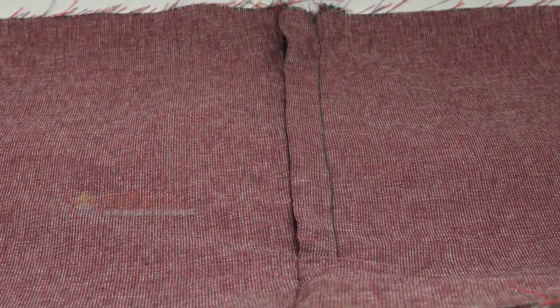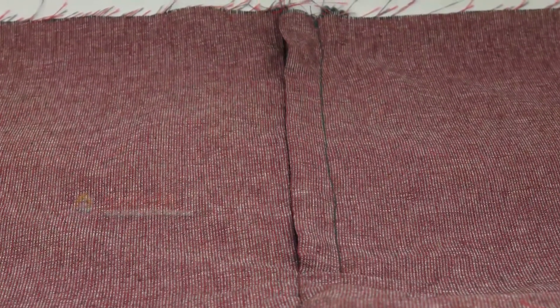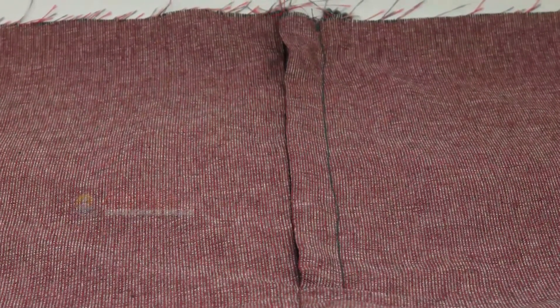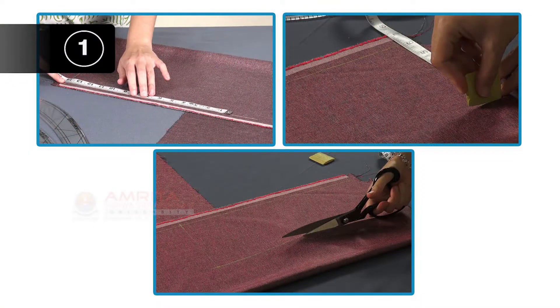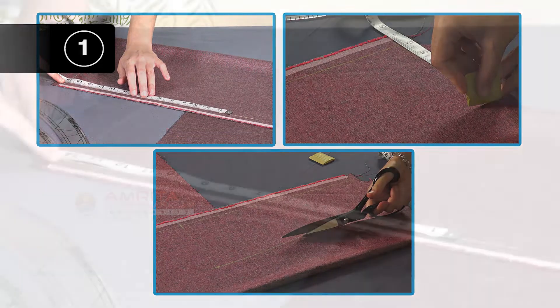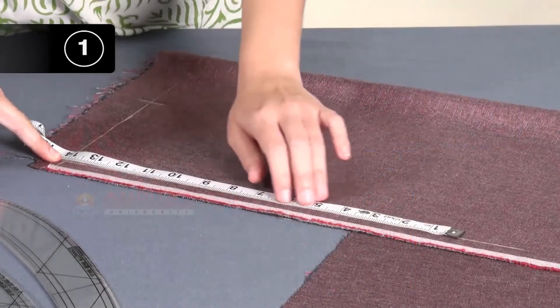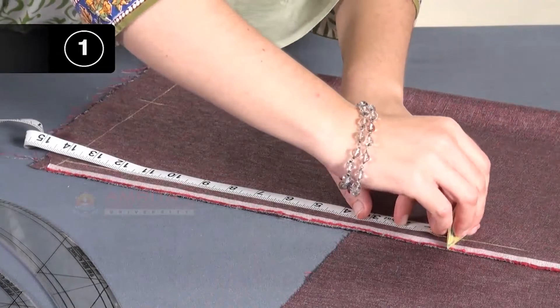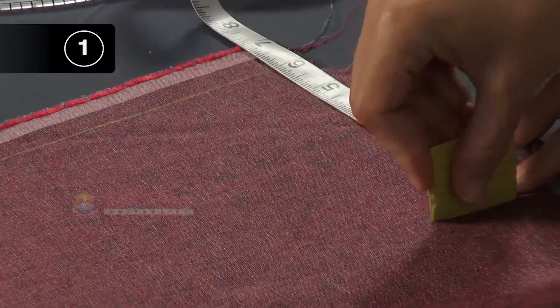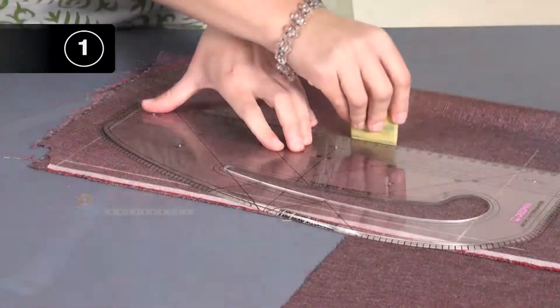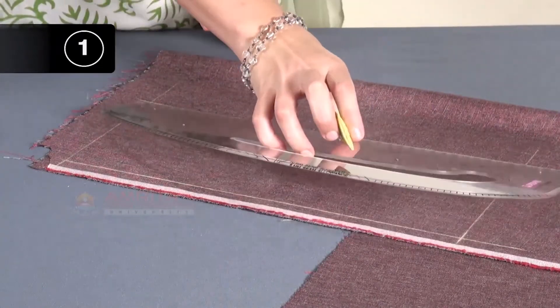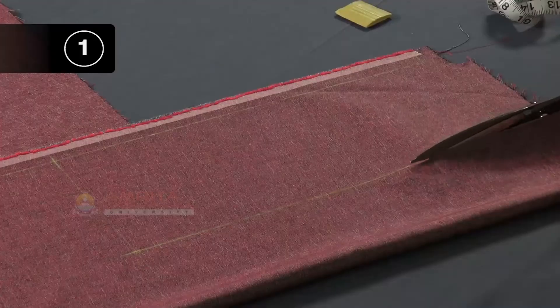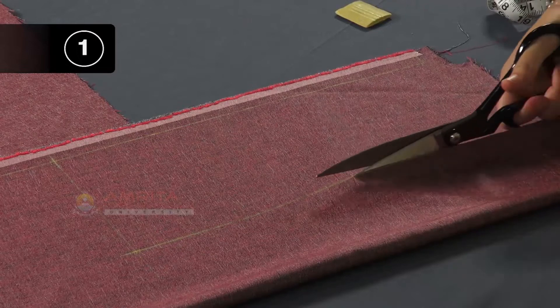Now let us watch how to stitch a lapped zipper placket on a sample fabric piece. Step 1: Measure, mark, and cut out the required sample fabric pieces. Measure and mark 14 inches by 6 inches squares on a double layer of cotton fabric with the help of a pattern square, measuring tape, and tailor's chalk. Use the shears and cut the marked square.